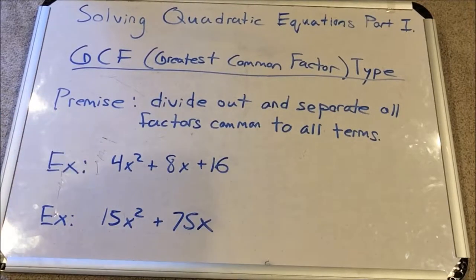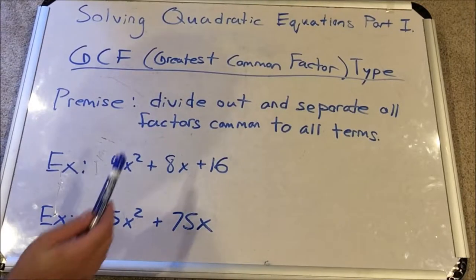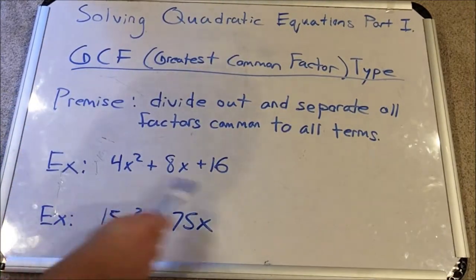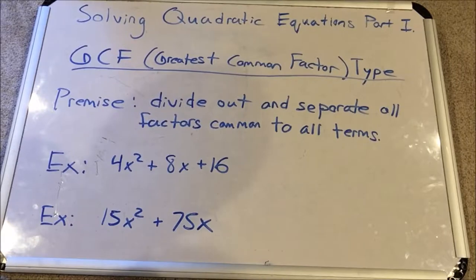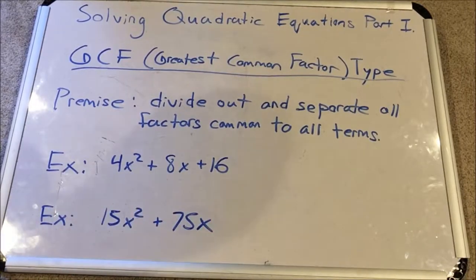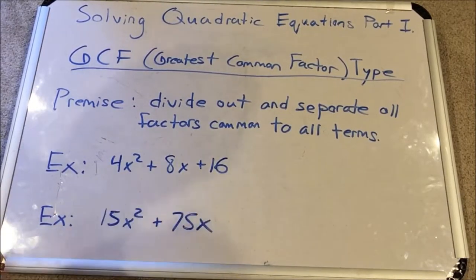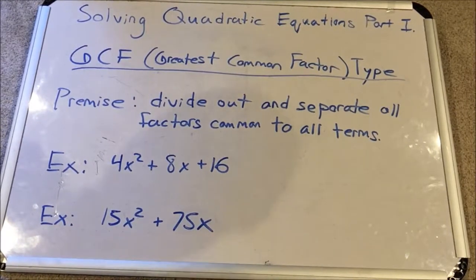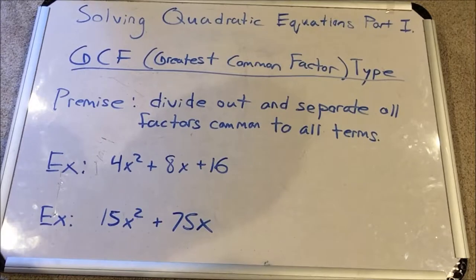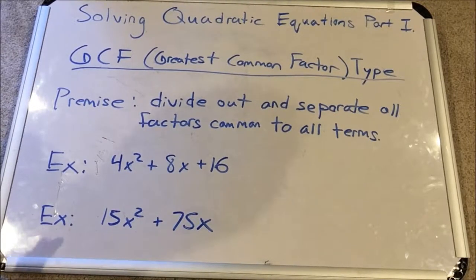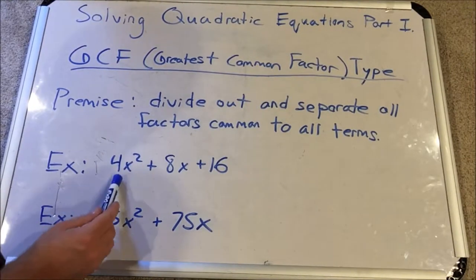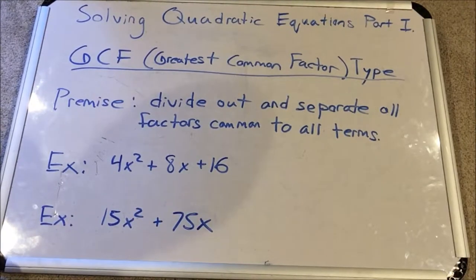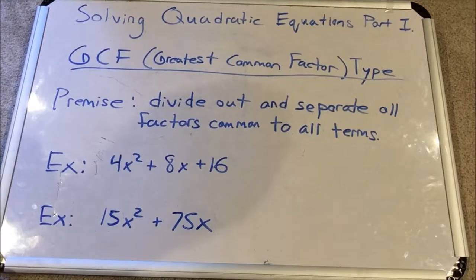Let's look at this quadratic expression — expression versus equation because it's not equal to anything, it's listed without an equal sign. We have 4x squared plus 8x plus 16. Do you notice any factors common to all three terms? Let's look at the x's — do each of the terms have a power of x? No, the last term does not, so x squared is not a common factor because it doesn't occur in all terms. But notice the 4, the 8, and the 16.